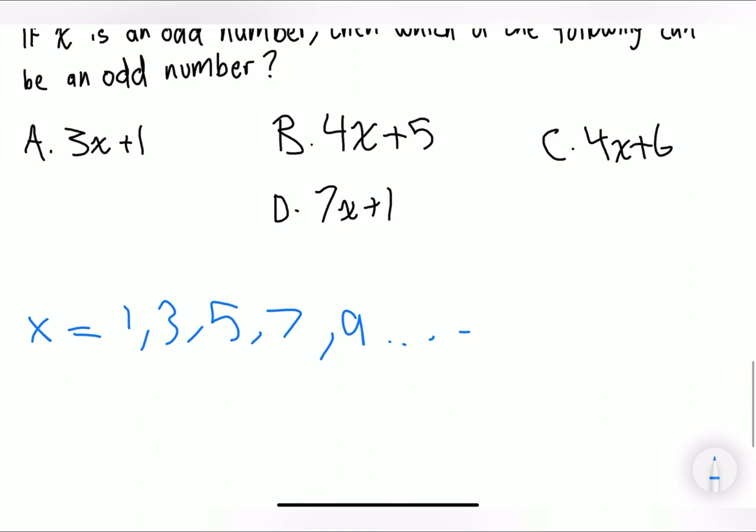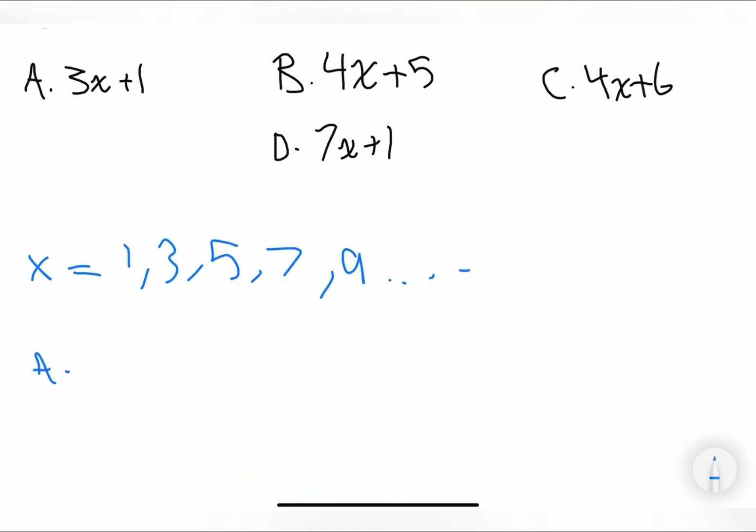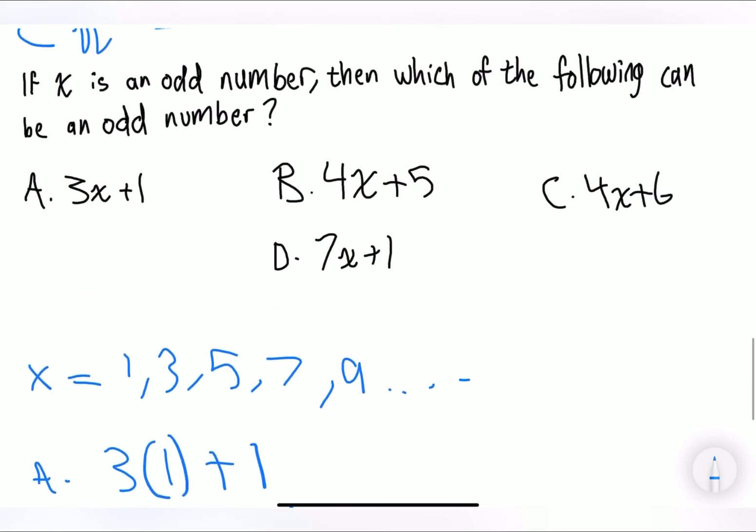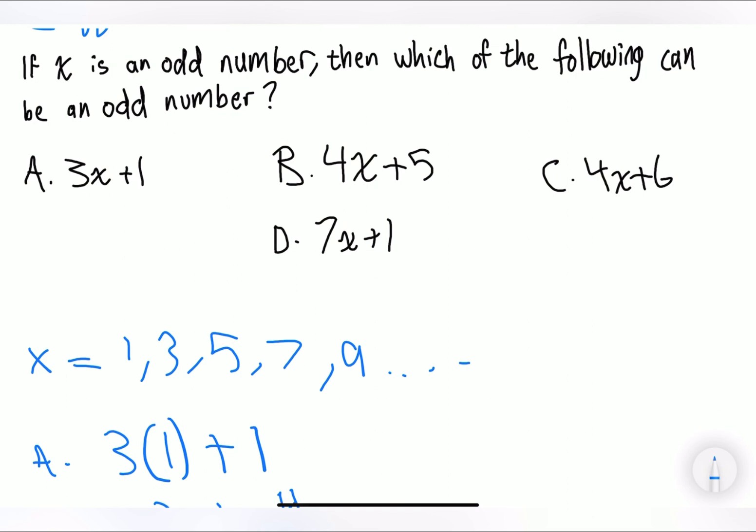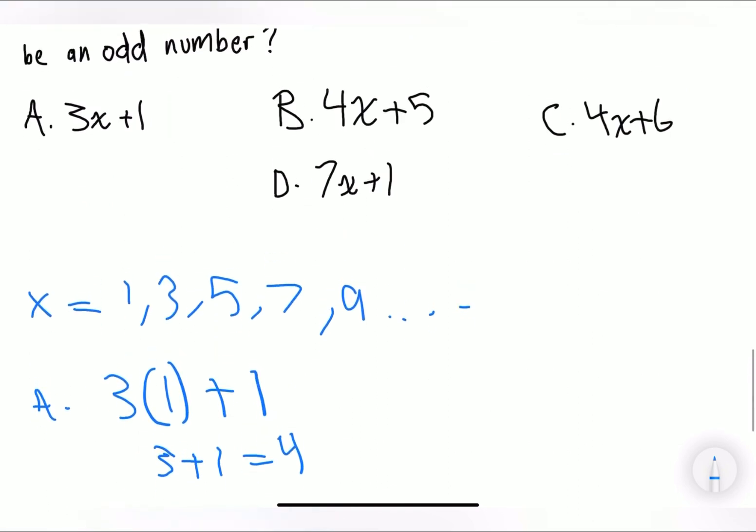So let's start with A. A is saying, let's try to plug this in, 3, and then we can put, let's put 1, because it seems to be the easiest. 3 times 1 is 3, plus 1 is equivalent to 4. So A is 4, and it's asking which of the following is going to be an odd number. So we automatically know that A is not the answer, because 4 is an even number.